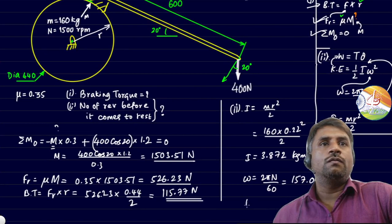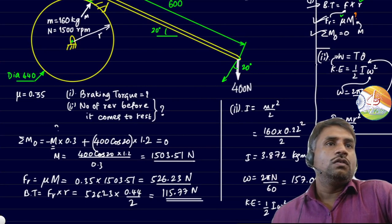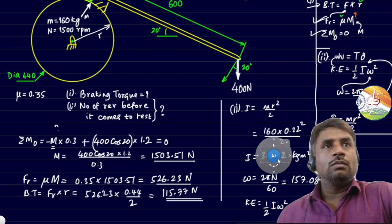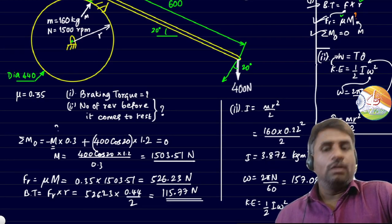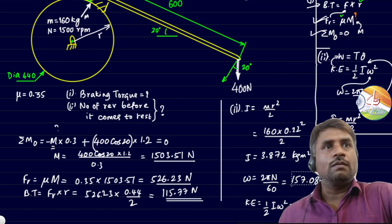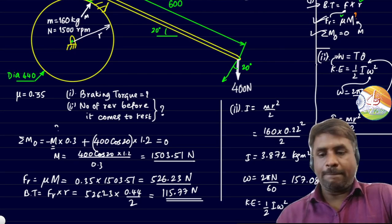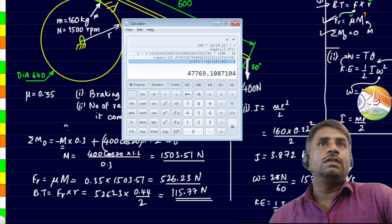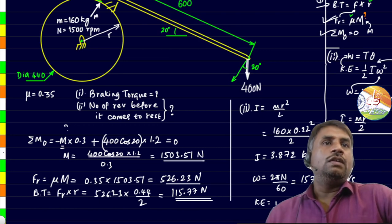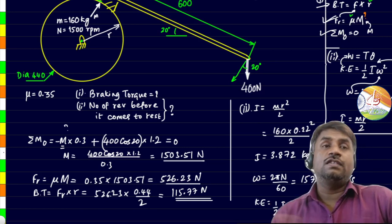Now it's time for us to find the kinetic energy. Let's put the formula for kinetic energy, that is half I omega square. That will be half of this value multiplied with omega square. Let's take this value and square it. That value is giving us 477,609 joules. This is the value we are ending up with. The unit for kinetic energy is joules and same is the unit for work as well.